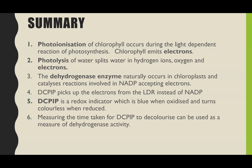In summary: photoionization of chlorophyll occurs during the light-dependent reaction, with chlorophyll emitting electrons. Photolysis of water splits water into hydrogen ions and oxygen, and the electrons from this are key to the investigation. The dehydrogenase enzyme naturally occurs in chloroplasts and catalyzes reactions involving NADP accepting electrons. DCPIP is a redox indicator that picks up electrons from the light-dependent reaction instead of NADP — it's blue when oxidized and colorless when reduced. Measuring the time for DCPIP to decolorize is used as the dependent variable to measure dehydrogenase activity.